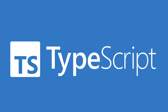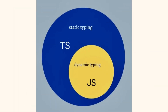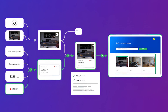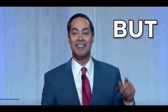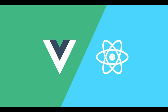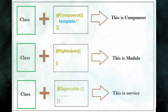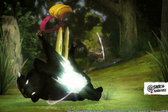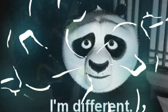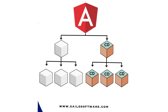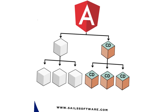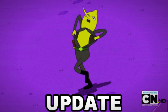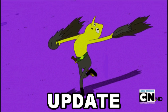Angular uses TypeScript as its main language, which is a superset of JavaScript that adds static typing and other features. Angular also uses components as the building blocks of UI, but unlike React or Vue, it uses decorators to add metadata to components. Angular also uses a different approach than virtual DOM or reactivity: change detection. Change detection means that Angular checks the changes in data and updates the UI accordingly.